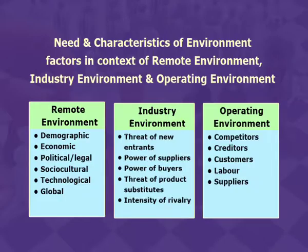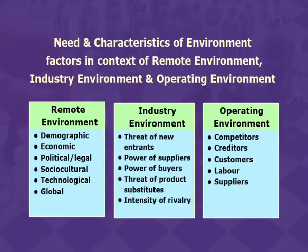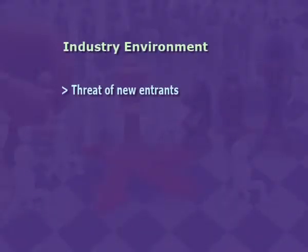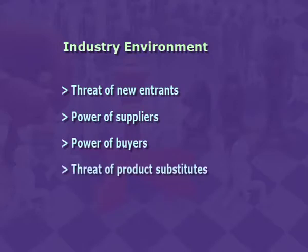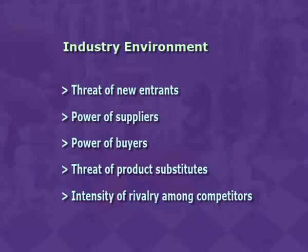Industry environment shows the set of factors which directly influence a firm and its competitive actions and competitive responses. These include: first, threat of new entrants; second, power of suppliers; third, power of buyers; fourth, threat of product substitutes; fifth, intensity of rivalry among competitors.